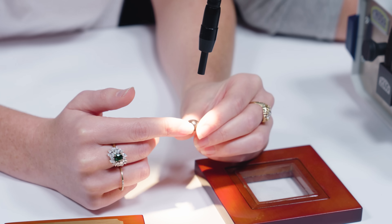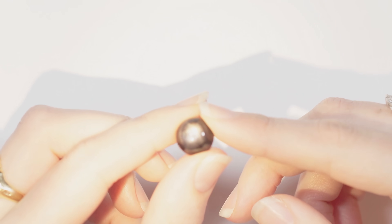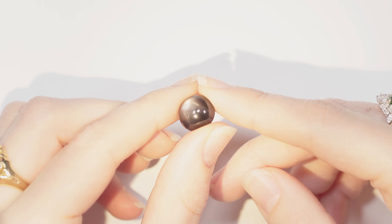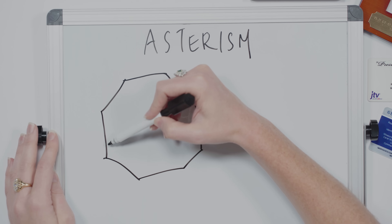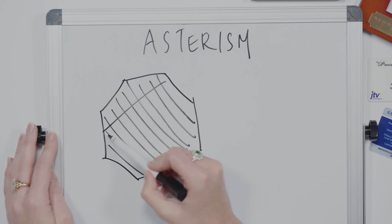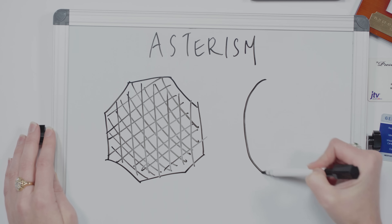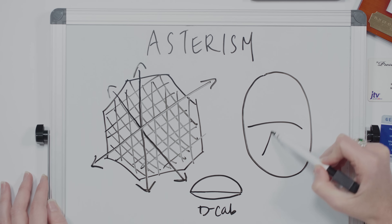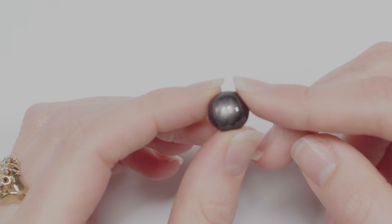Asterism is like chatoyancy plus. Essentially, you have oriented needle inclusions in roughly three different directions. When you cut the stone in cabochon, the star effect reflects perpendicular to each one of those inclusions — so it's actually pretty simple. A lot of star sapphires are heat treated to really bring out the star effect. The cool thing about this gemstone is that, according to its ID, it doesn't have any evidence of having been heated, so it's totally natural. It woke up like this.